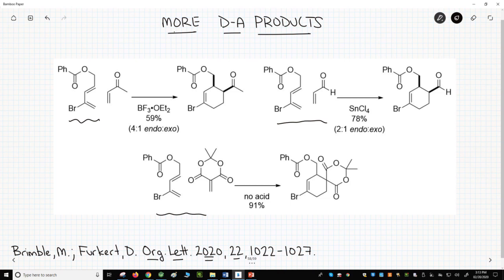In conclusion, the Brimble group used the Diels-Alder reaction to synthesize cyclic molecules with a variety of useful functional groups. If you want to see more details about this chemistry, then check out the reference on this slide or in the video description. Please subscribe, like, or leave a comment. Take care.